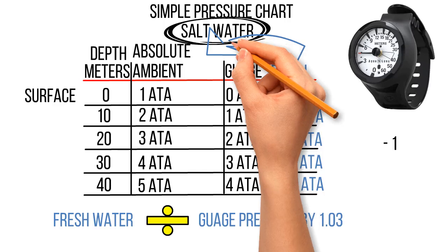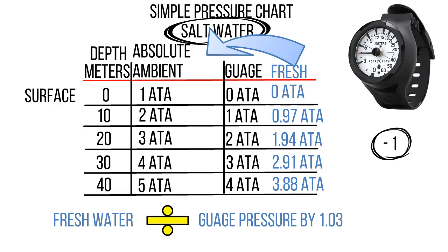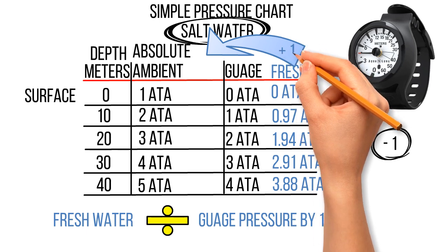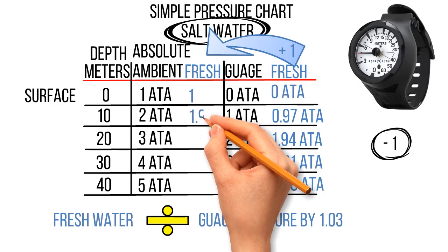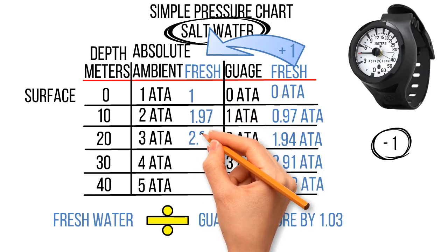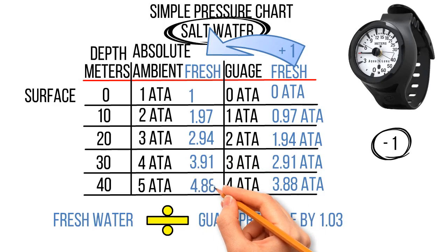Finding the absolute or ambient pressure in freshwater — well, to find the gauge pressure we subtracted 1 from the absolute or ambient. So if we want to go from gauge to absolute or ambient pressure, all we need to do is add 1 to our gauge pressure. So now we have our freshwater gauge pressures in the chart, we can add in the absolute or ambient freshwater pressures just by adding 1. At the surface it would be 1, at 10 metres 1.97, at 20 metres 2.94, and so on.